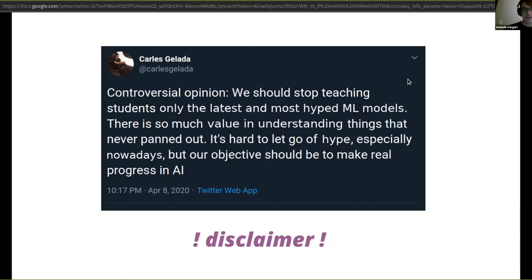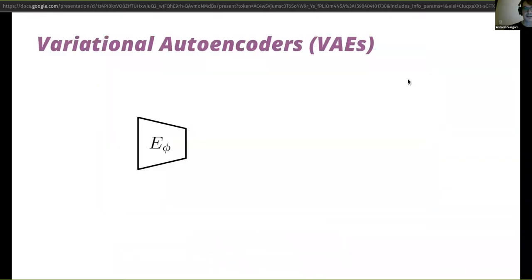Feel free to interrupt at any time on Zoom to ask questions, or ask afterwards even when the recording has stopped. Let's begin. I'll show you what VAEs are with a step-by-step, block-by-block introduction. A variational autoencoder comprises, in essence, three modules. The first is the encoder.